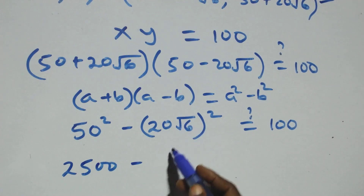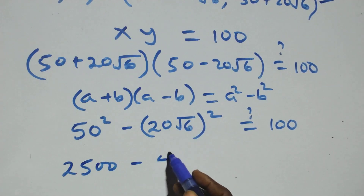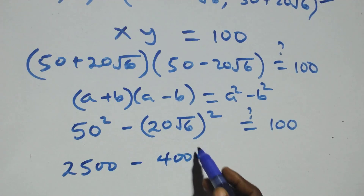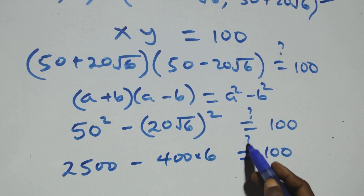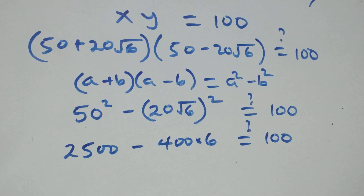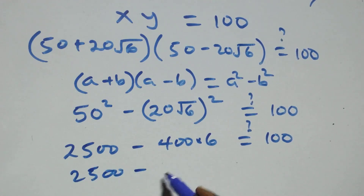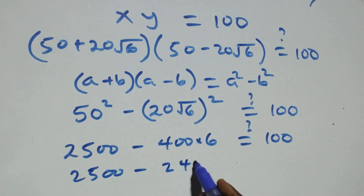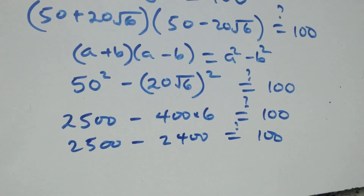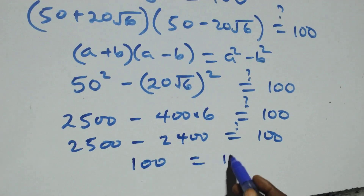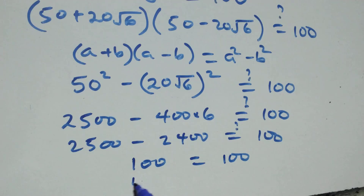Computing: 50 squared gives 2,500. Then 20 squared times root 6 squared gives 400 times 6, which is 2,400. So we have 2,500 minus 2,400, which equals 100. That is 100 on this side equals 100 on the right hand side. The left hand side also equals the right hand side.